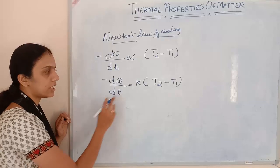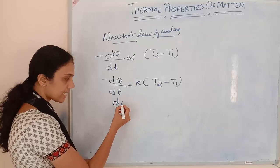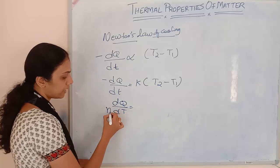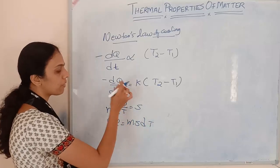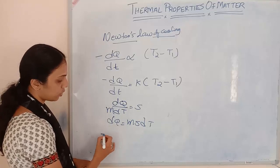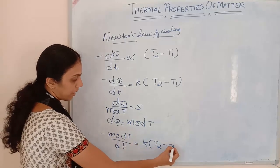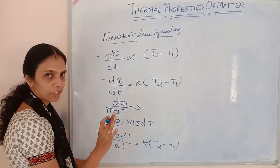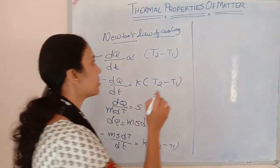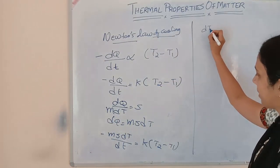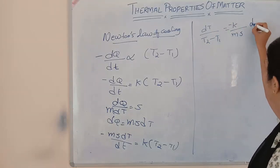So we got minus dQ/dt equals K into (T2 minus T1). From the specific heat capacity: dQ/dt equals M times S, so dQ equals M·S·dT. Substituting, instead of dQ: minus M·S·dT divided by small t equals K into (T2 minus T1). Now, taking capital T together and moving other terms to the opposite side, we get dT divided by (T2 minus T1) equals minus K divided by (M·S) into dt.